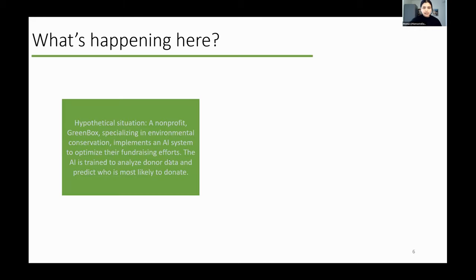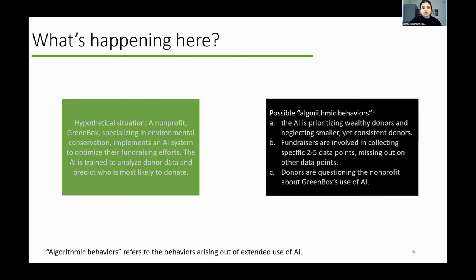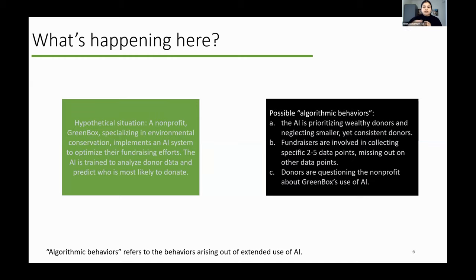Let's see a hypothetical example of what the problem looks like. Say there was a nonprofit called Greenbox — an environmental conservation organization — and they implemented an AI solution to optimize their fundraising efforts. Their goal is to analyze their donors and predict who is most likely to donate. What are the possible problems that can arise, like algorithmic behaviors? AI can start prioritizing wealthy donors. Fundraisers can start focusing on just collecting one or two very specific data points, missing out on others. Or donors can start questioning the nonprofit about Greenbox's use of AI. When it's not human-centric, we are talking about issues of trust, transparency, and accountability.